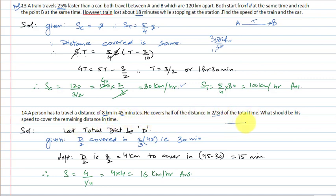Total distance to cover is 8 km in 45 minutes. He covers half the distance — that is 4 km — in two-thirds of 45 minutes, which equals 30 minutes. So 4 km remaining needs to be covered in 45 minus 30 = 15 minutes.